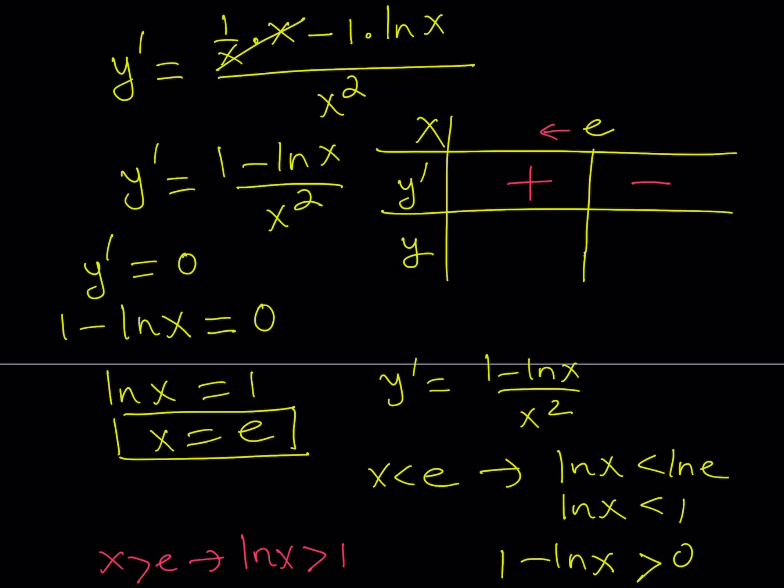Now, what does it mean if the first derivative is positive on an interval? That means that function is increasing. Why? Because you're talking about a function whose slopes of tangents are always positive. So that function has to increase. But it doesn't necessarily mean it's concave up or concave down. It just means that it's increasing. And for the negative interval, our function is decreasing. Which means we have a maximum at x equals e. So this function is supposed to increase and then decrease, thereby making a maximum at x equals e.